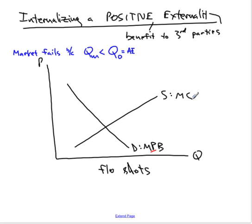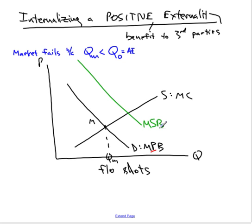All other things being equal, the market will produce QM flu shots — that's how many consumers want to buy and producers want to sell at the same price. But in the case of a positive externality, there's a social benefit higher than the private benefit. The marginal social benefit is greater than the marginal private benefit.